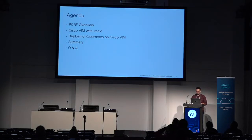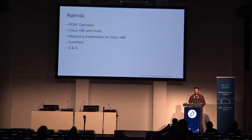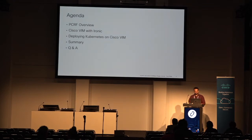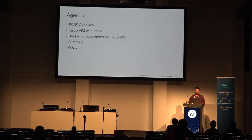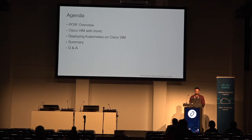So with that, here is the agenda for today. I'm going to give a quick overview of what PCRF is — it's the cloud native app we tried to deploy on CVIM. I'll explain why they decided to go cloud native and how CVIM helped, and how it meshed well together. They wanted to deploy on bare metal, and CVIM was running mainly VMs until this point — we now have bare metal support via Ironic. I'll also give a quick overview of how we deployed Kubernetes. CCP support is still not there; it's in the planning stage. This was a proof of concept, so we manually deployed Kubernetes, and then deployed the actual app.